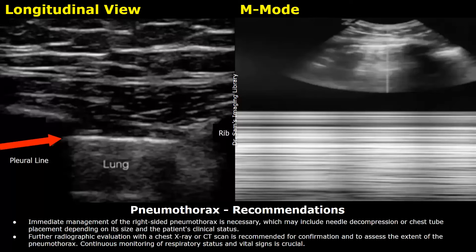Recommendations: Immediate management of the right-sided pneumothorax is necessary, which may include needle decompression or chest tube placement depending on its size and the patient's clinical status. Further evaluation with a chest X-ray or CT scan is recommended for confirmation and to assess the extent of the pneumothorax. Continuous monitoring of respiratory status and vital signs is crucial.